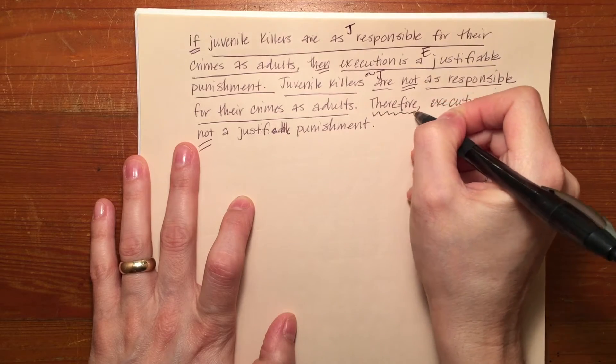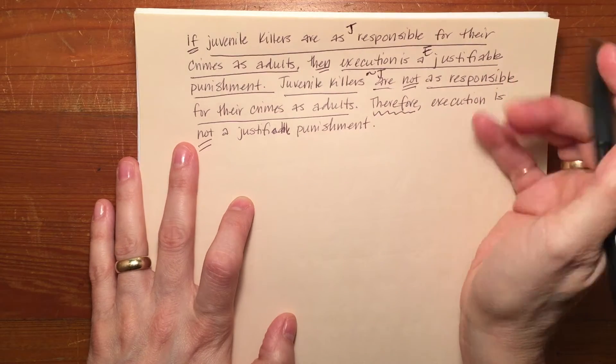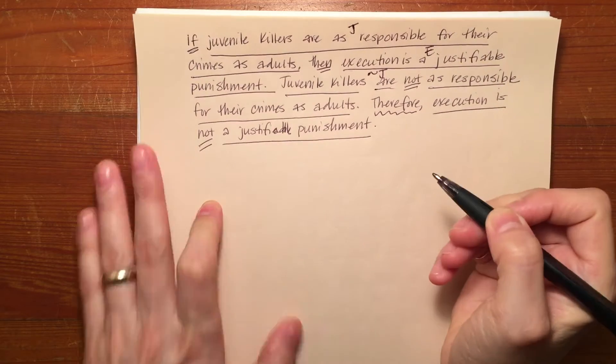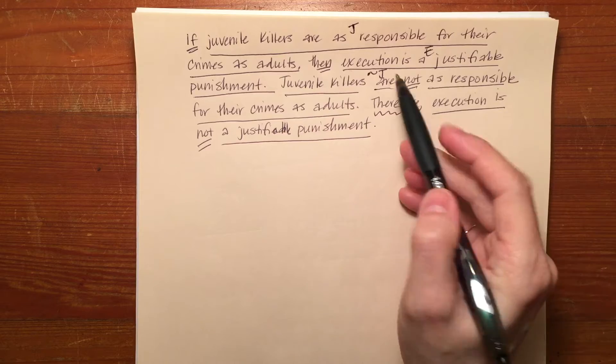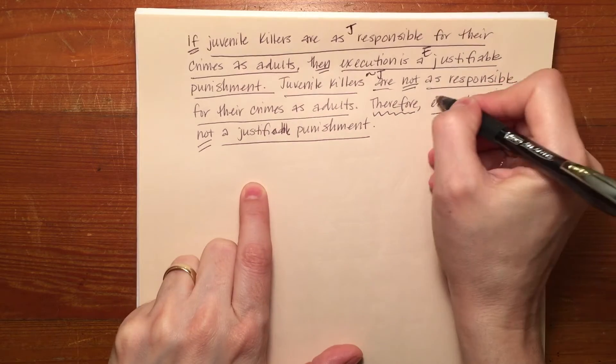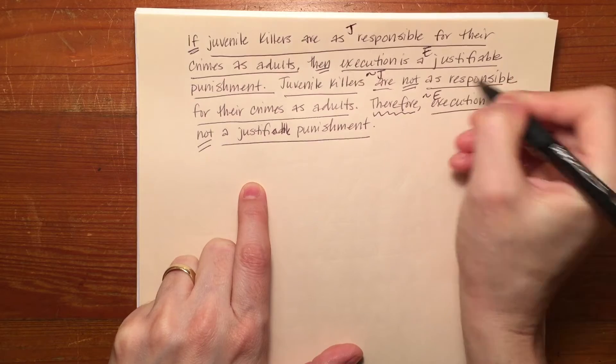Therefore, it makes it very clear where the conclusion is. Execution is not a justifiable punishment. Again, we've got a negation. Execution is a justifiable punishment versus execution is not a justifiable punishment. So we'll make this tilde E.